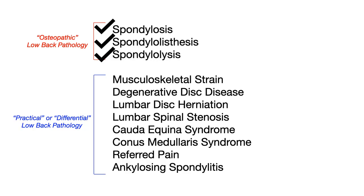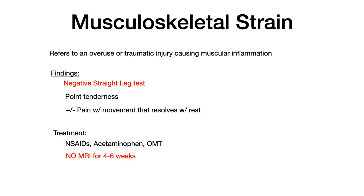So at this point we've talked about the three terms: spondylosis, spondylolisthesis, and spondylolysis — classic high yield terms that show up on COMLEX in the OMT section. In the remainder of this video we'll go through the other low back pathologies. Let's start with musculoskeletal strain. Not all injuries to the low back are organic bony issues — sometimes you can just have muscle involvement. Musculoskeletal strain refers to an overuse or traumatic injury causing muscular inflammation.